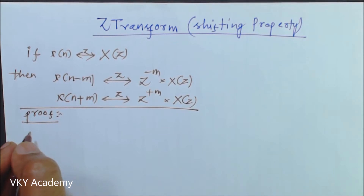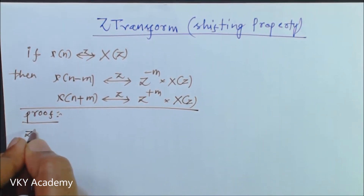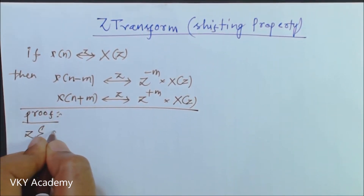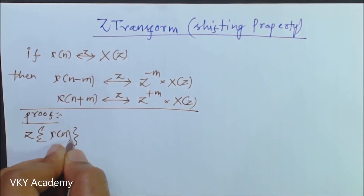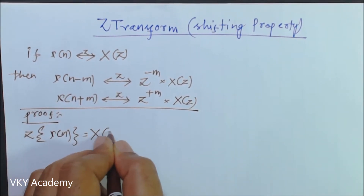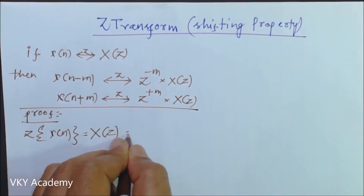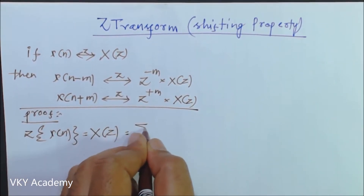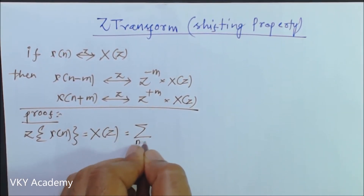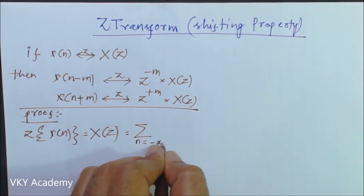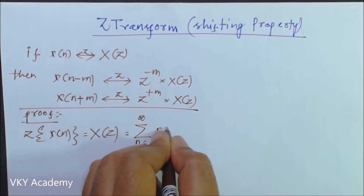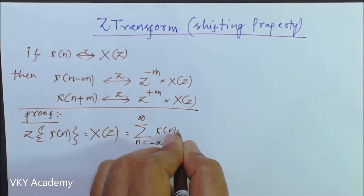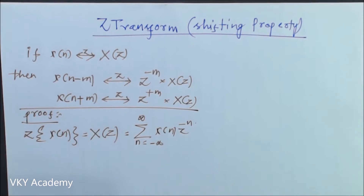From the Z transform formula, we know the Z transform of x of n is X of z, which is the summation from n equal to minus infinity to infinity of x of n times z to the power minus n.